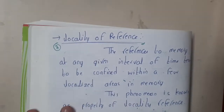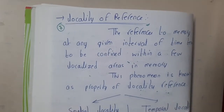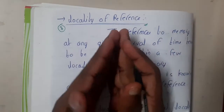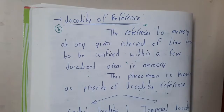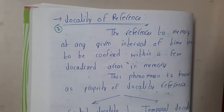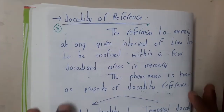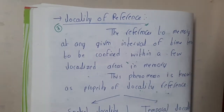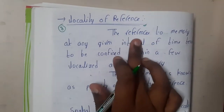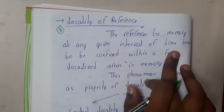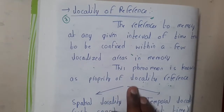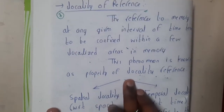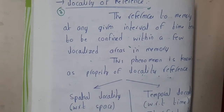Now let us go through locality of reference. Whenever you are reading a file, what is the most commonly occurring next thing? That is locality of reference. The reference to memory at any given interval of time tends to confine to a few localized areas in memory — this phenomenon is called locality of reference.